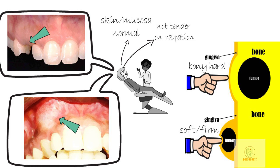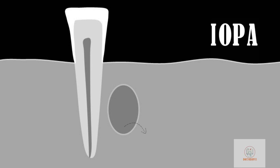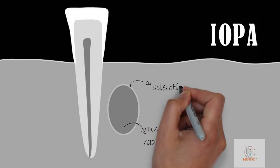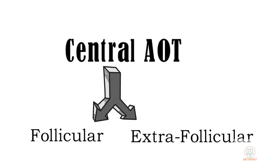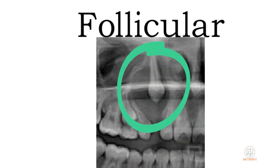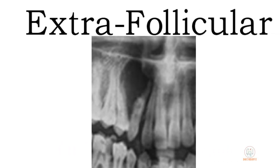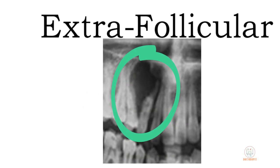On radiograph, AOTs classically show a unilocular radiolucency with a smooth corticated or sclerotic border. The type of central AOT governs the association of this radiolucency with adjacent teeth. The follicular type shows a radiolucency associated with the crown of an unerupted tooth, making it look very similar to a dentigerous cyst. On the other hand, the extra-follicular type is located near the roots of erupted teeth.